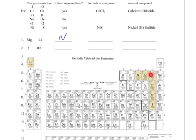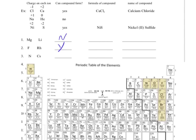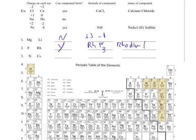For the next one, I have fluorine and Rh, which is rhodium. Yes, a compound can most definitely form. Rhodium is a plus 3. I put the positive one first — Rh with a plus 3 — then F afterwards, which is a minus 1. Swapping numbers gives a 1 to 3 ratio. Because rhodium can form more than one ion, I name it rhodium 3 fluoride.